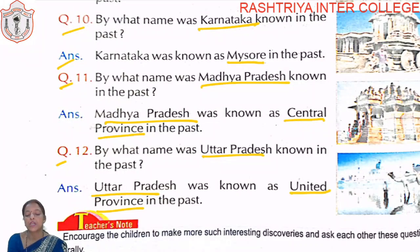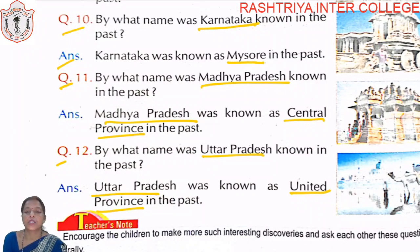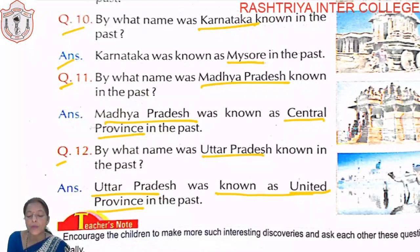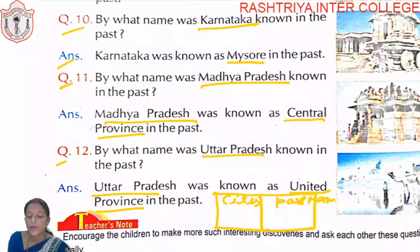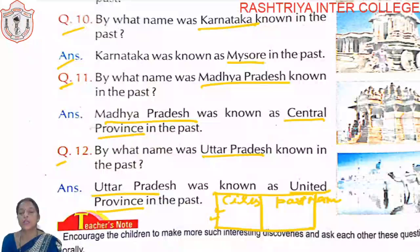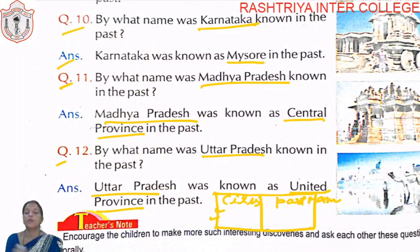Students, aapko ye sabhi questions acche se learn karne hain. Learn karne ke baad aapko apni GK copy mein center mein line karke likhna hai — cities aur past names — number one, number two, and so on. So students, abhi is chapter ko acche se learn karna hai, apne book copy mein bhi karna. Thank you everyone, stay home, stay healthy.